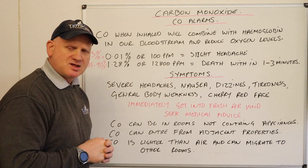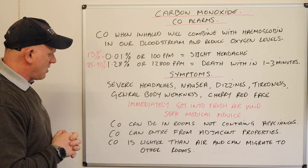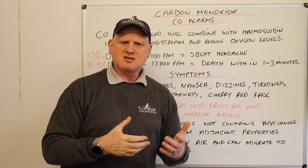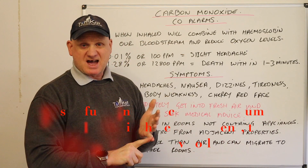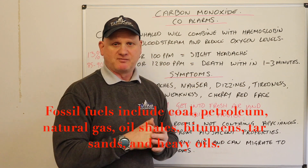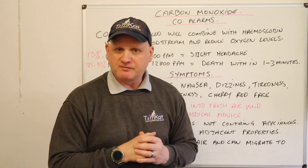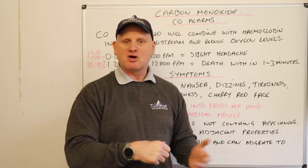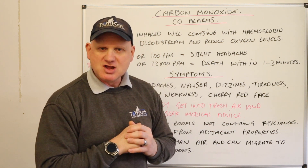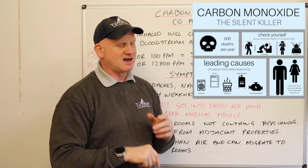So how does CO get around the house? CO can be in rooms not containing appliances — and we mean appliances that burn fossil fuels: gas, LPG, coal, any appliance that burns fossil fuels can give off carbon monoxide. If we don't burn fossil fuels correctly or don't give them the right amount of oxygen, it turns carbon dioxide into carbon monoxide. It's known as the silent killer because you can't see it, you can't smell it, you can't taste it.